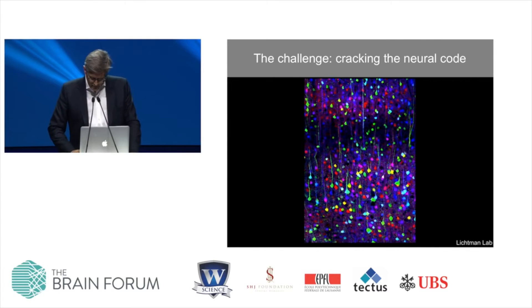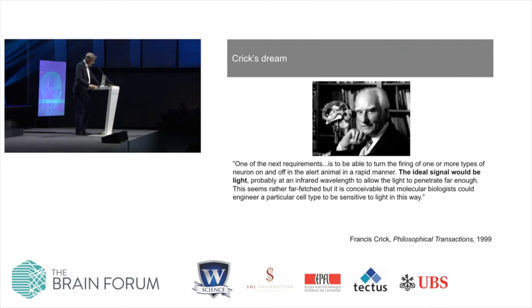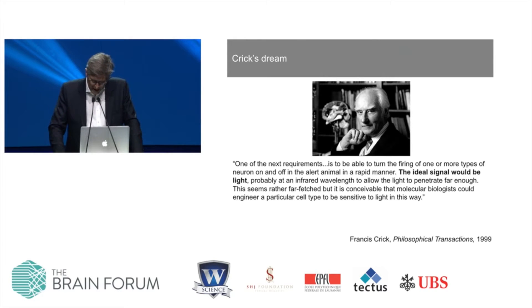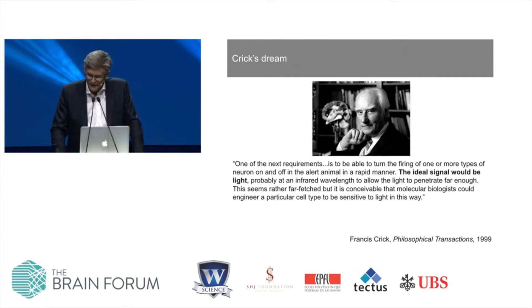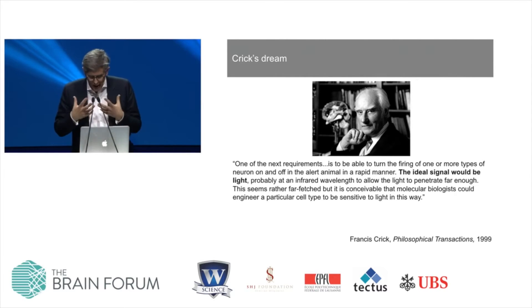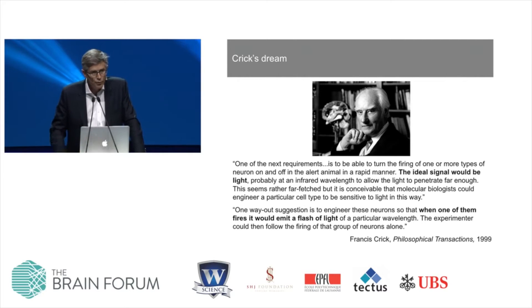The great molecular biologist Francis Crick, who cracked the genetic code, suggested that the way to attack this problem is by using light. In a series of lectures at UCSD nearly 20 years ago, he outlined two strategies: one to read activity and one to write activity in neural circuits. This is the same review in Philosophical Transactions that Gero mentioned, outlining strategies for both reading and manipulating activity in neural circuits with light.